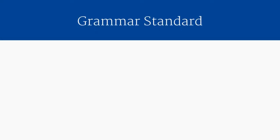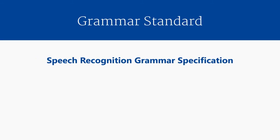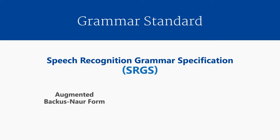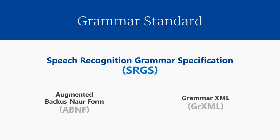The grammar standard Lumenvox supports is called the Speech Recognition Grammar Specification, or SRGS. This is a W3C specification that defines two equivalent grammar formats: the Augmented Backus-Naur Form, or ABNF, and the Grammar XML form, or GRXML. ABNF grammars are generally more concise and thus a little easier to write by hand, whereas GRXML follows the usual XML standards and is commonly used for automatically generated grammars. Both formats are equivalent, so there is no reason to use one over the other except as a matter of personal preference.